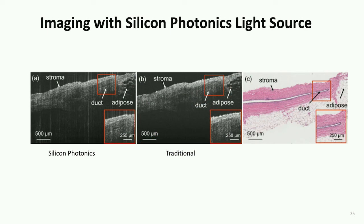This is an image of breast tissue measured with our photonic chip. It would cost a few percent of a full large OCT system today, which is available in only very, very few laboratories. Thank you very much.